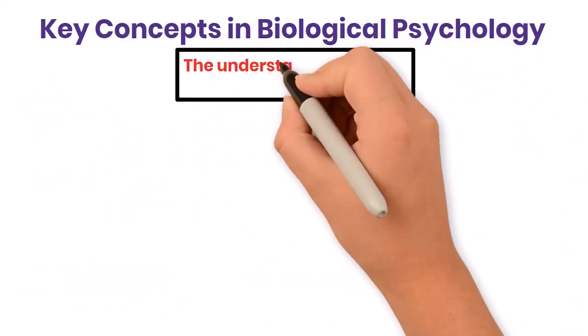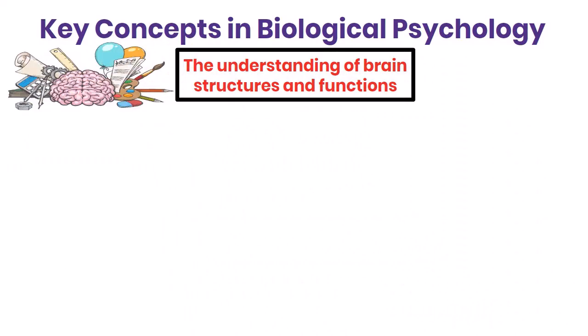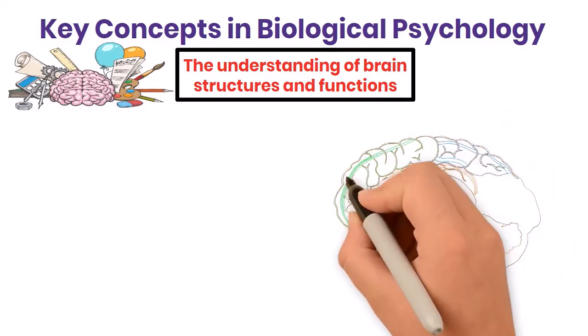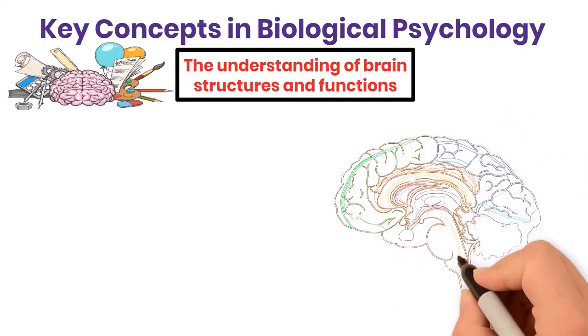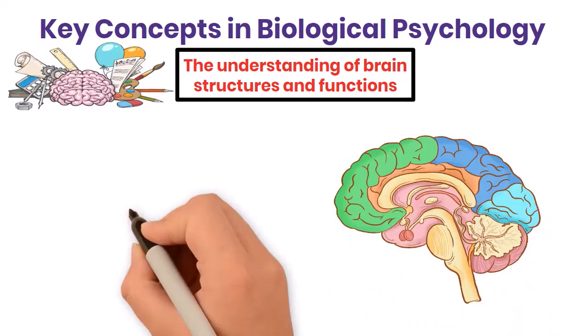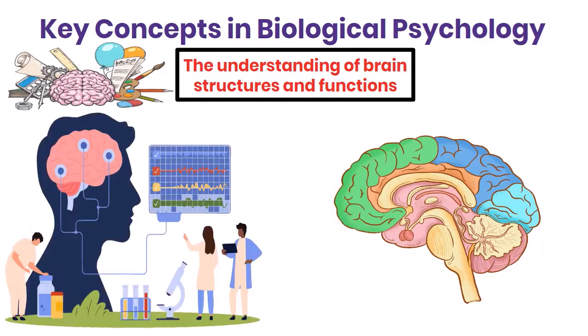Another key concept is the understanding of brain structures and functions. Different parts of the brain control different functions. For example, the frontal lobe is associated with decision-making, problem-solving, and planning, while the hippocampus is crucial for memory formation. By studying brain structures, biopsychologists can link physical changes in the brain to changes in behavior and mental processes.